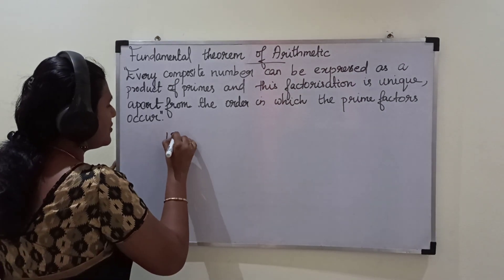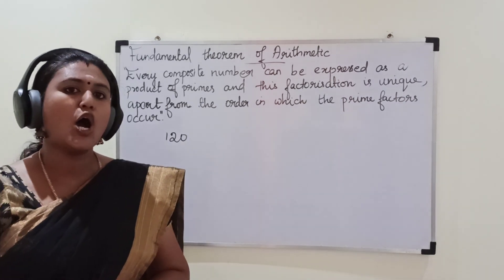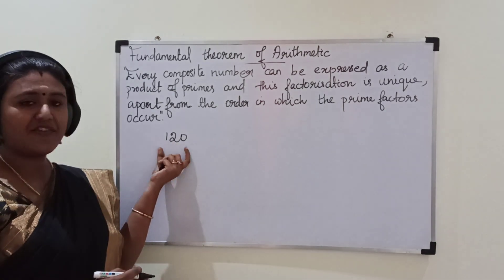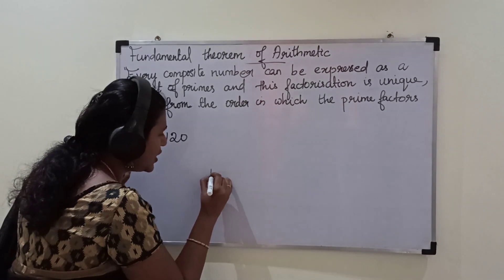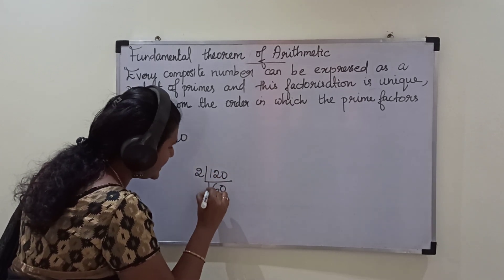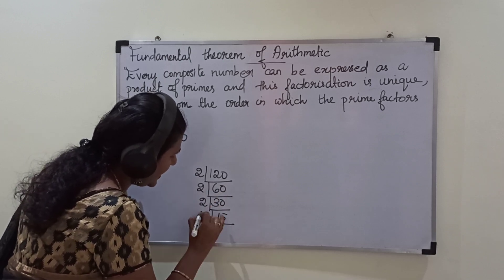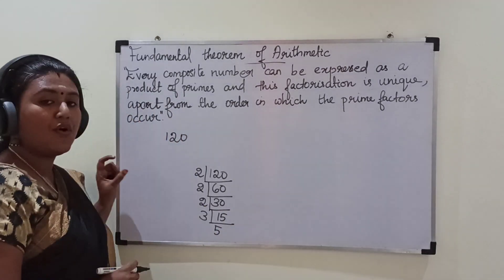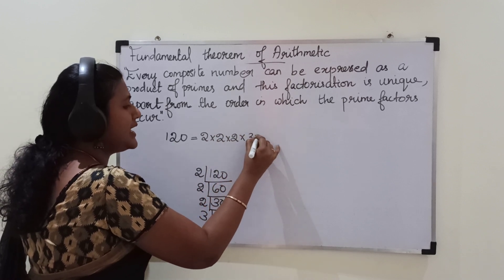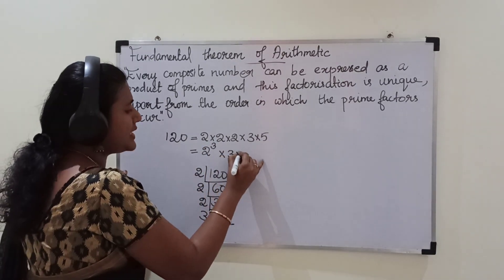Let us consider a composite number 120. In our earlier classes, we have studied how to find the prime factorization of a number. So we are going to do the prime factorization for 120. We will divide 120 by the prime number 2: giving 60, again by 2 giving 30, again by 2 giving 15, then by 3 giving 5. So we can write 120 as 2 × 2 × 2 × 3 × 5, or as 2³ × 3 × 5.